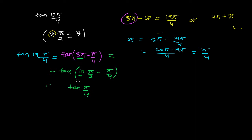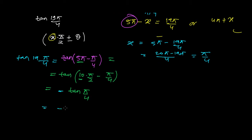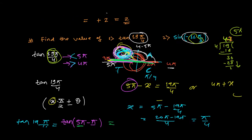Now I need to determine the sign. The angle 19π/4 lies in the second quadrant. By the CAST rule — All positive in Q1, Sine positive in Q2, Tangent positive in Q3, Cosine positive in Q4 — tan is negative in the second quadrant. So tan(19π/4) = −tan(π/4) = −1.